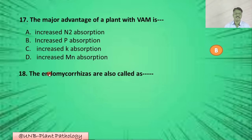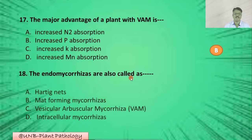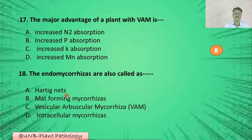Question number eighteen: Endomycorrhizae are also called — A: Hartig nets; B: mat-forming mycorrhizae; C: vesicular arbuscular mycorrhizae (VAM); D: intracellular mycorrhizae. The correct option is C: vesicular arbuscular mycorrhizae.